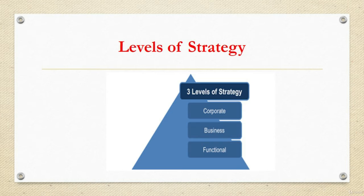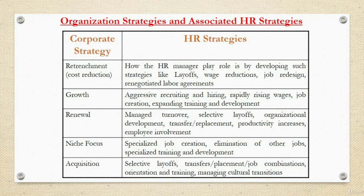For example, a firm may have multiple lines of operations. The corporate strategy will outline whether the organization should compete in or withdraw from these lines of business, or consider further advances. The vision of the firm is designed at the corporate strategy level. Now let's discuss some of the corporate strategies related with their associated HR strategies. The first one is retrenchment — a cost reduction strategy designed by the top level management of the organization.